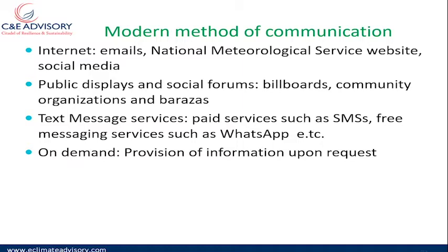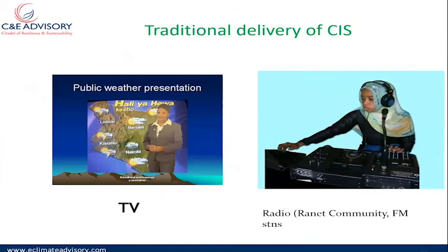There is also on-demand communication, where a client has made a specific request. This happens mostly in the transport sector, the aviation industry, large-scale agriculture, and marine sectors — where information is provided upon request. Radio is also very common for delivering climate information. This is what we call the traditional way of delivering climate information service — the only method available until mobile phones came in.